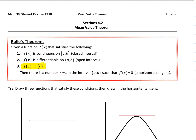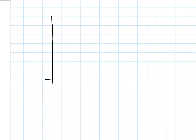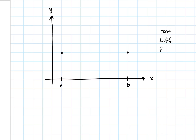Right now, just on your paper, draw any function that satisfies those conditions. Take a function from a to b and draw it so that f(a) equals f(b) and it is continuous and differentiable. So don't lift up your pencil as you draw from a to b — start at a, make sure you end at b with f(a) equal to f(b), and don't draw any sharp corners or cusps since it's also differentiable.